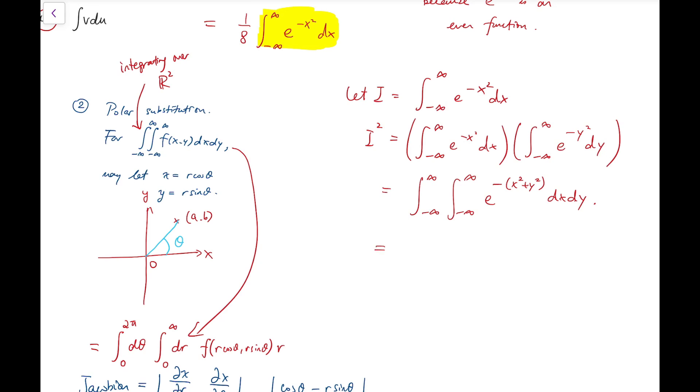Now by the polar substitution that I've mentioned just now, I can rewrite this as theta from 0 to 2 pi and then r from 0 to infinity of the function e to the minus r squared cos squared theta plus r squared sine squared theta, multiplying by extra r, the Jacobian. So the integrand would now become just e to the minus r squared times r. Now the function becomes integrable.